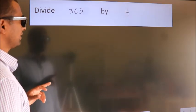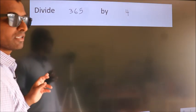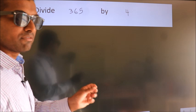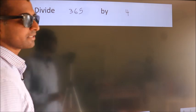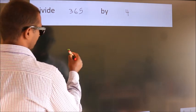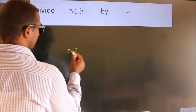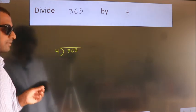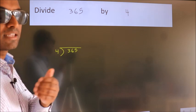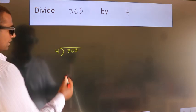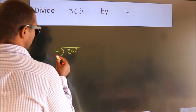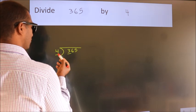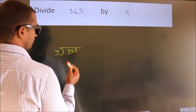Divide 365 by 4. To do this division, we should frame it in this way: 365 here, 4 here. This is your step 1. Next, here we have 3, here 4. 3 is smaller than 4, so we should take two numbers.